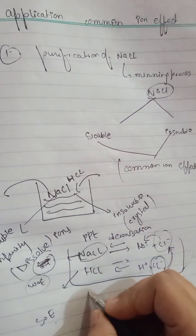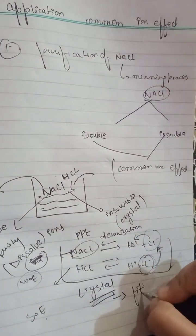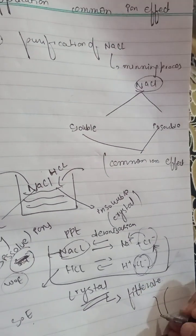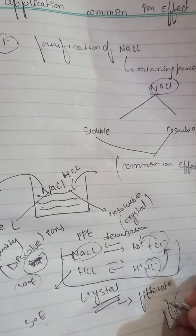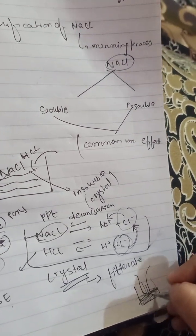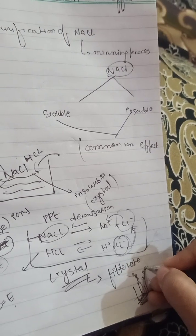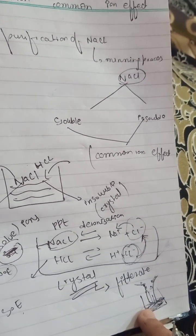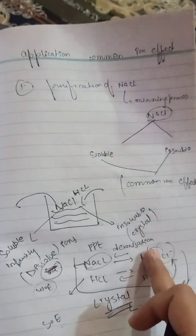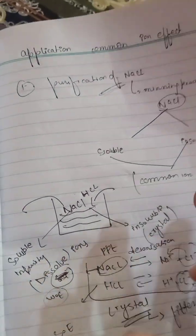The NaCl crystal is formed in the solution and removed by filtration. Using a filter paper, the soluble impurities pass through into the filtrate while the insoluble crystals are retained on the filter paper. In this way, NaCl gets purified. This was about the application of the common ion effect — specifically, the purification of NaCl with the help of the common ion effect.